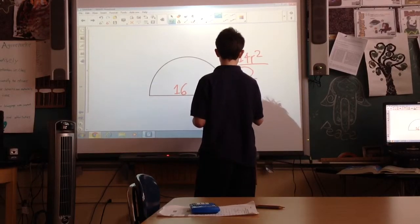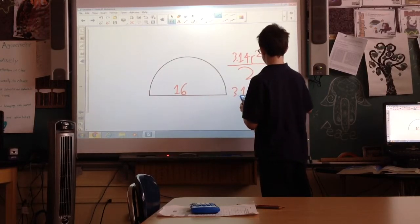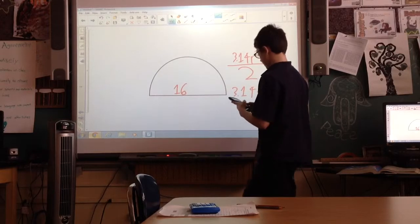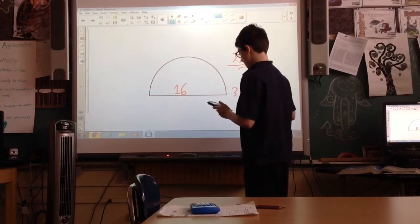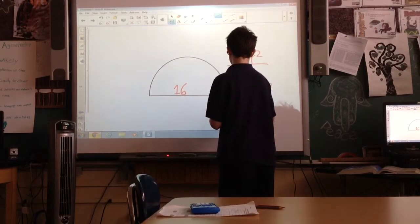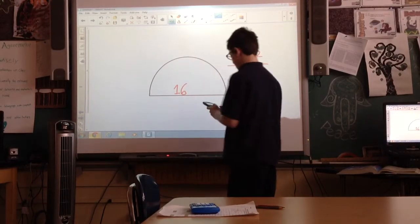So 3.14 times 8 squared is 296, and then we've got to divide it by 2.